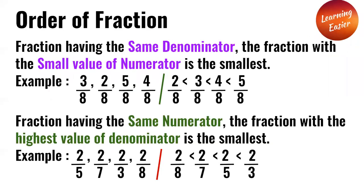Order of fractions: If fractions have the same denominators, then the fraction with the smallest numerator is the smallest fraction. If fractions have the same numerator, then the fraction with the highest value of the denominator is the smallest fraction.